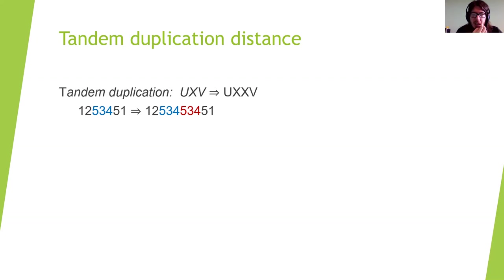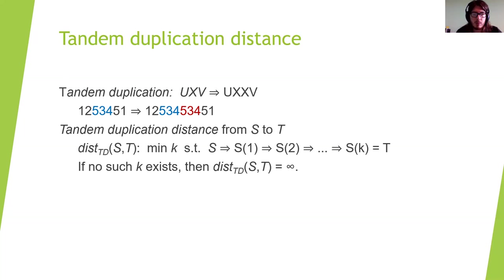So we obtain the string 1, 2, 5, 3, 4, 5, 3, 4, 5, 1. The tandem duplication distance from the string s to the string t, denoted by dist_td(s,t), is the minimum k such that there is a series of k duplications which brings us from the string s to the string t.